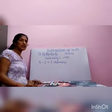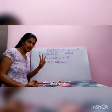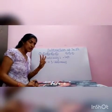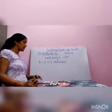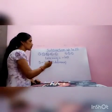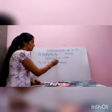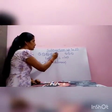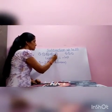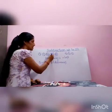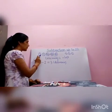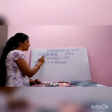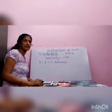We can subtract in 3 different ways. Firstly, we can cross out the objects. When we are taking away 2, we will cross out the 2 objects. And then we can find that 1, 2, 3 are left.